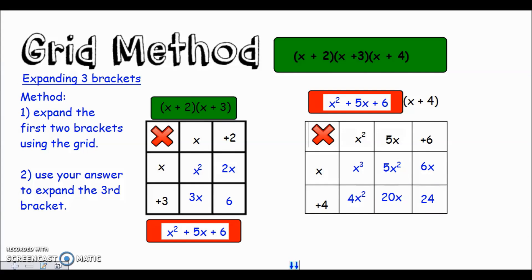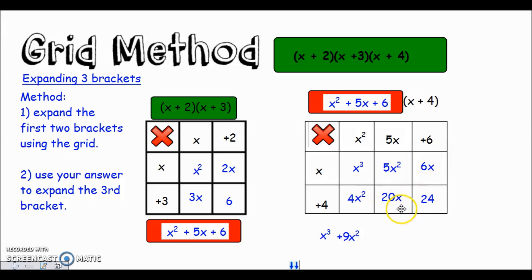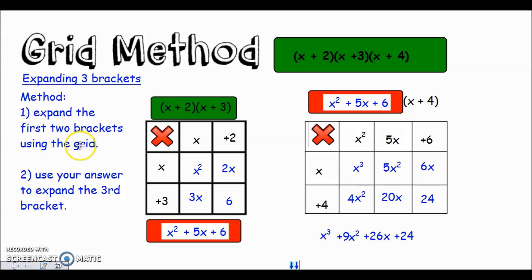So the final answer is: x cubed - there were no other x cubed terms - then nine x squared, then twenty-six x, then plus 24. That is our final solution; we've expanded all three brackets. The method is really just two steps: do the first two brackets, then use that answer in a bigger grid with the final bracket, and apply the grid method as normal.